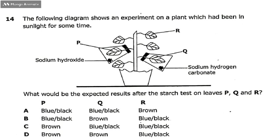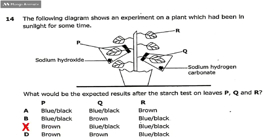Option C says leaf P will be brown — yes. Leaf Q will be blue-black — yes. And R will be blue-black. So the correct answer is C. Option D is wrong because it says leaf Q will be brown, which is incorrect. So the correct answer is C.